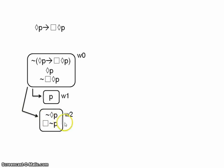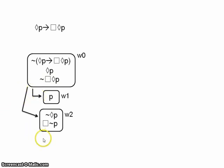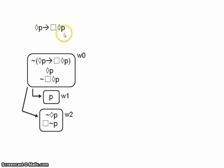Then we have 'not necessarily possibly P', which we can open up into a new world with 'not possibly P'. You can convert that into 'necessarily not P' if you like, but that's all that can be done. Remember that 'possibly' and 'not necessarily' require you to open up a new world each time you use them. Our tree is open, and that means the argument is invalid. So how do we confirm that this is the case?